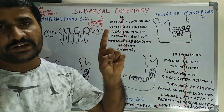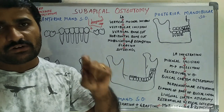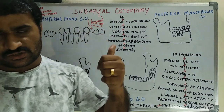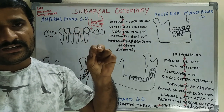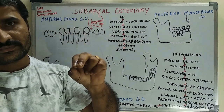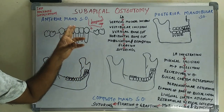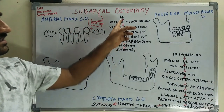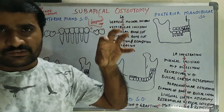Coming to the anterior mandibular subapical osteotomy, there are two indications. The first is extrusion of the mandibular anteriors to a level that requires correction. The second is to close a mild anterior open bite. In those cases also you will go for anterior mandibular subapical osteotomy. Now we will discuss the surgical procedure, beginning with LA infiltration.